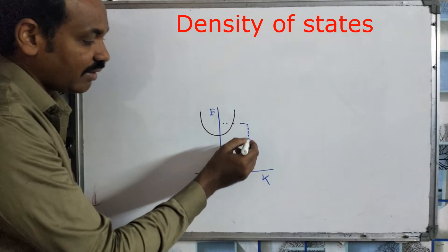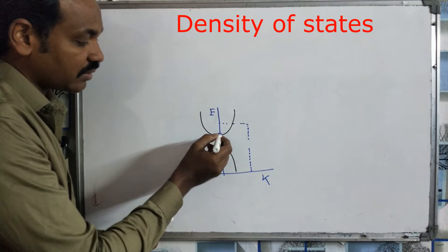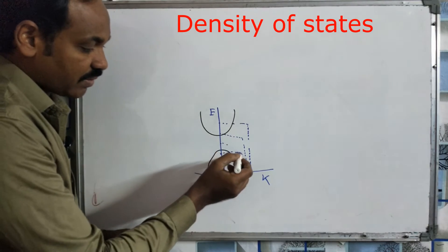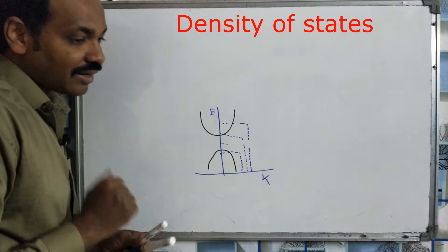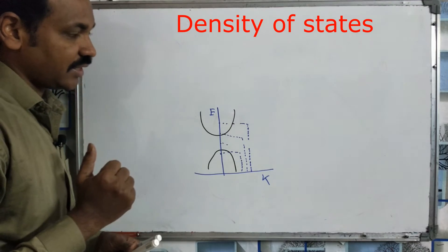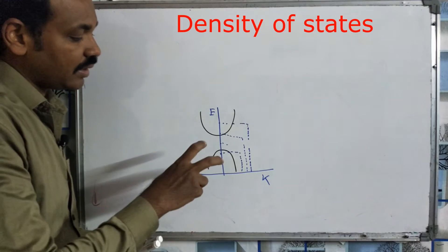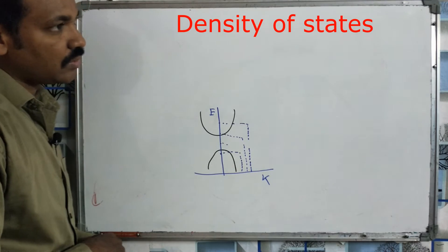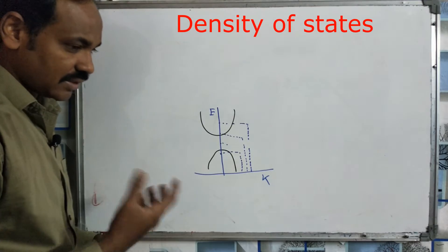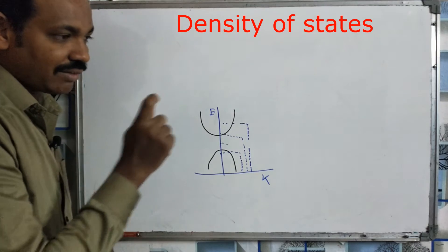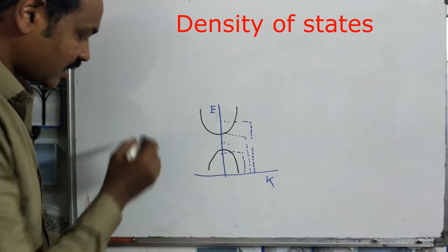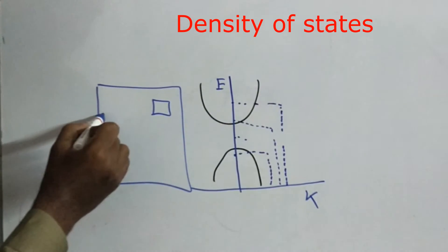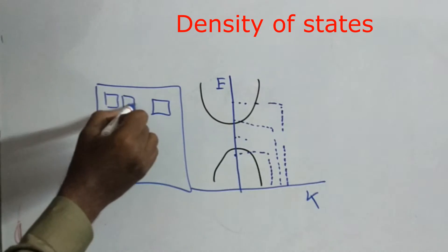We know that the energy level is corresponding to the k-value. We know that the k-value is particular, and the k-value will be formed between certain k-values. Here is a classroom — a regular corridor, a continuous classroom.